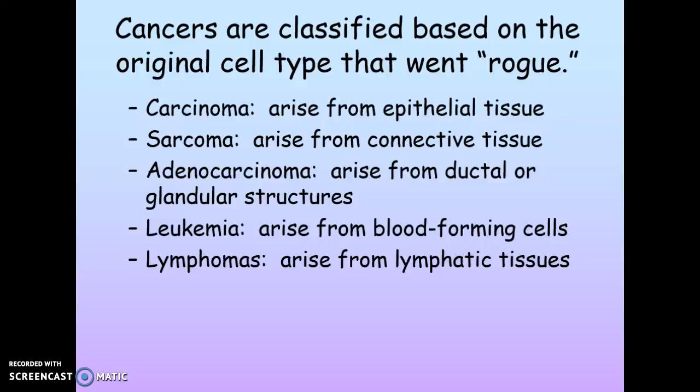As you recall from the previous slides, cancer is going to arise from a particular cell that has gone rogue — gone off the radar, AWOL. They are not functioning properly anymore. Malignant cancers are going to be named according to where in the body they originated from. You will need to know what these cancer types are and the originating cells.